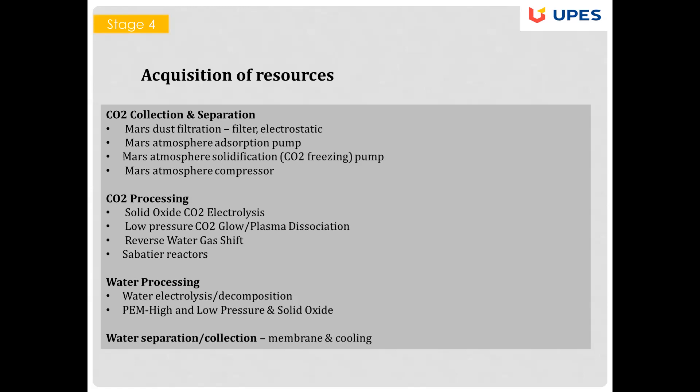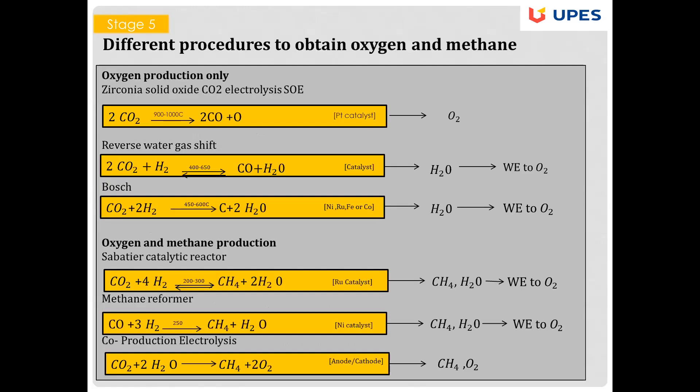Resource processing for production of mission consumables involves extraction and processing of resources into products that can be used for critical mission consumables such as rocket propellants, fuel cell reactants, and life support commodities such as water, oxygen, and nitrogen.